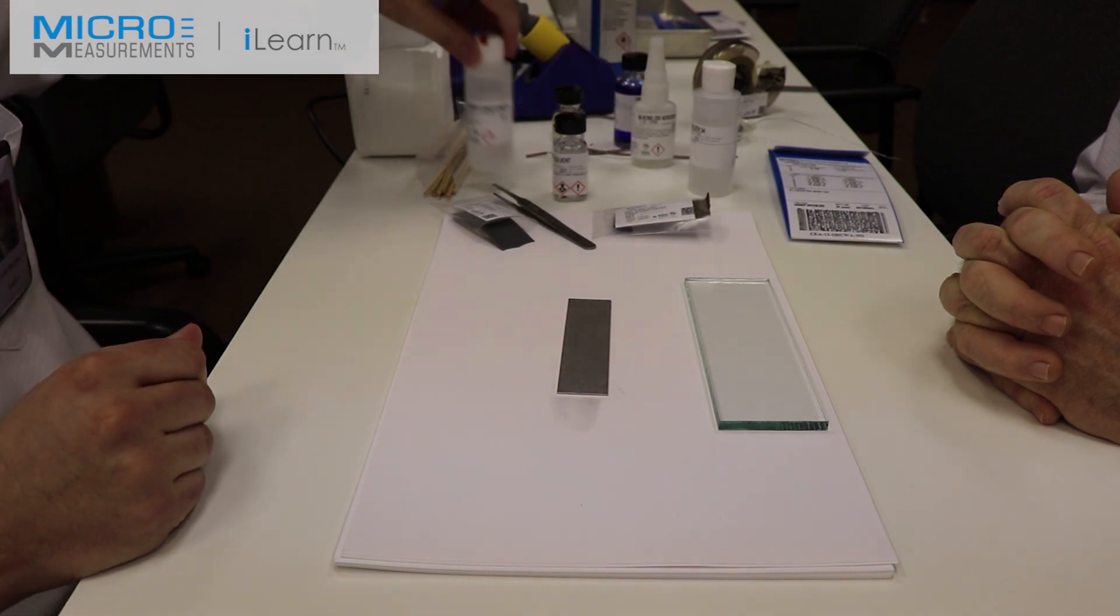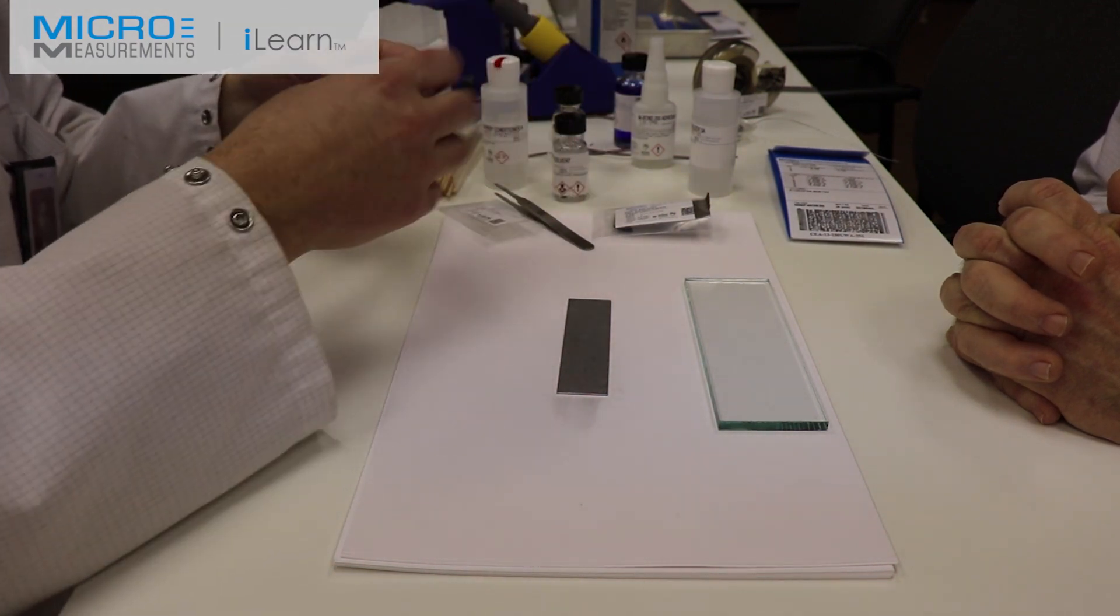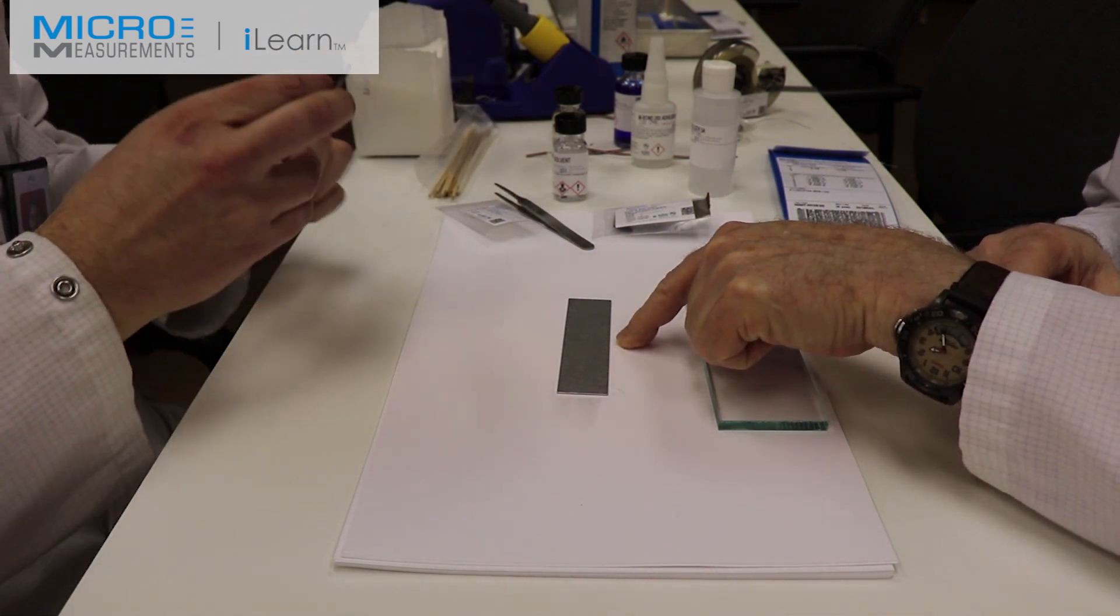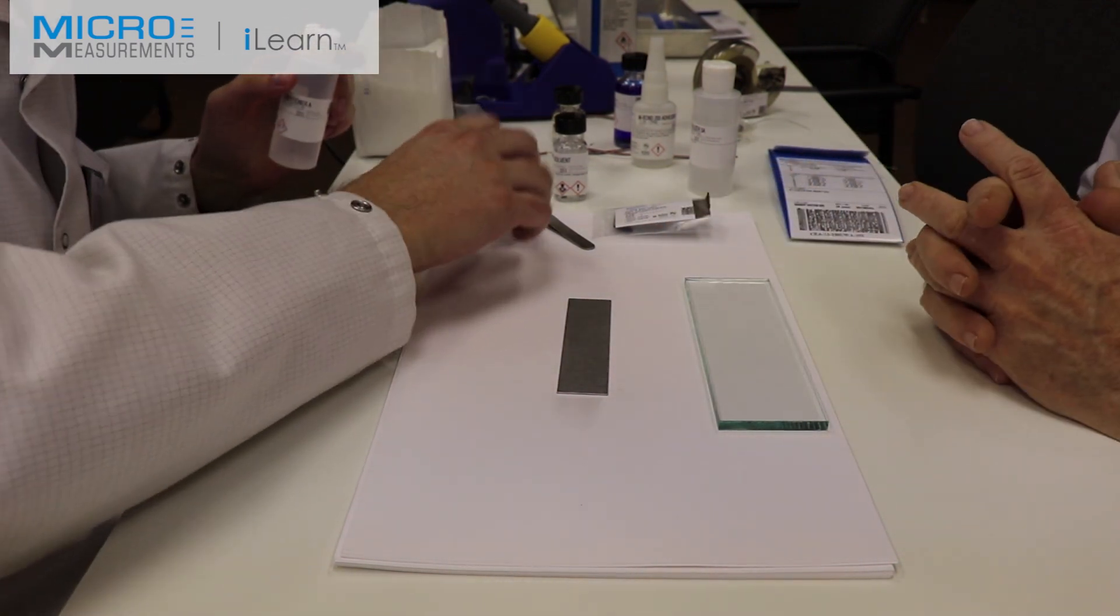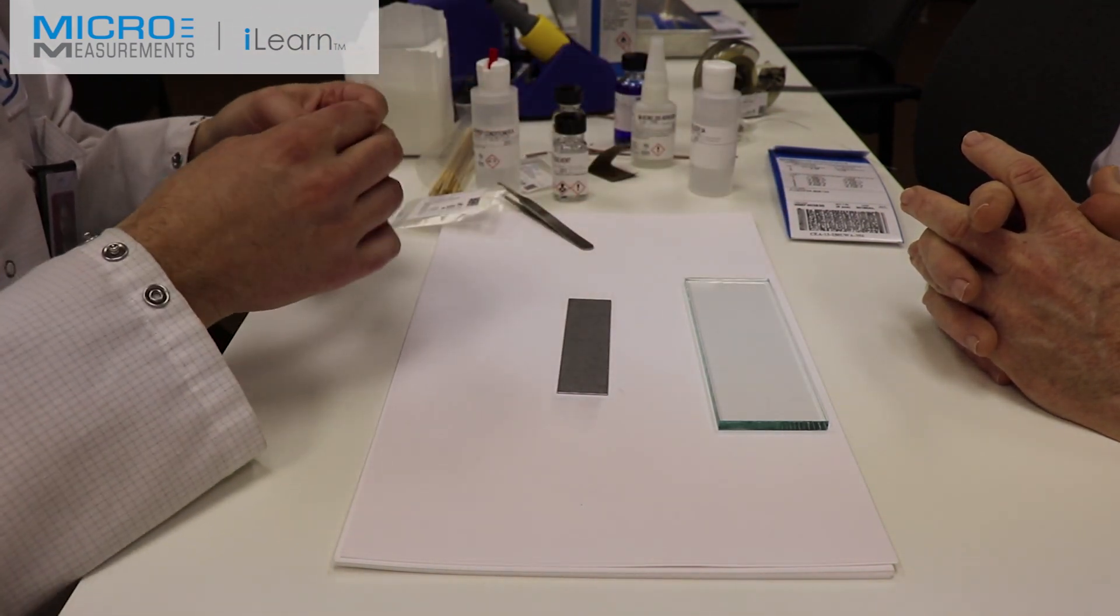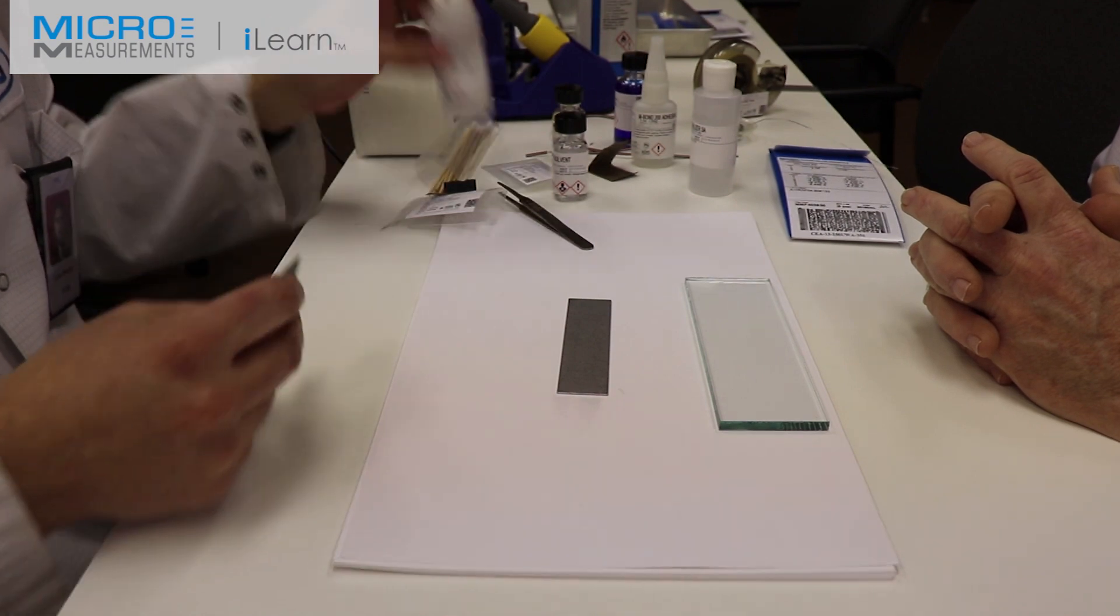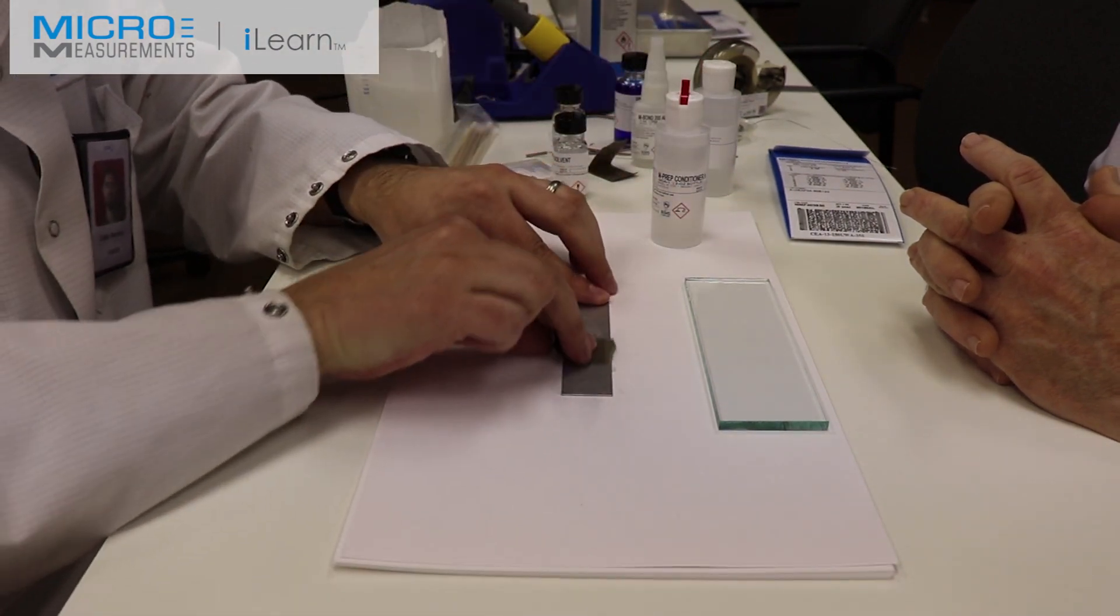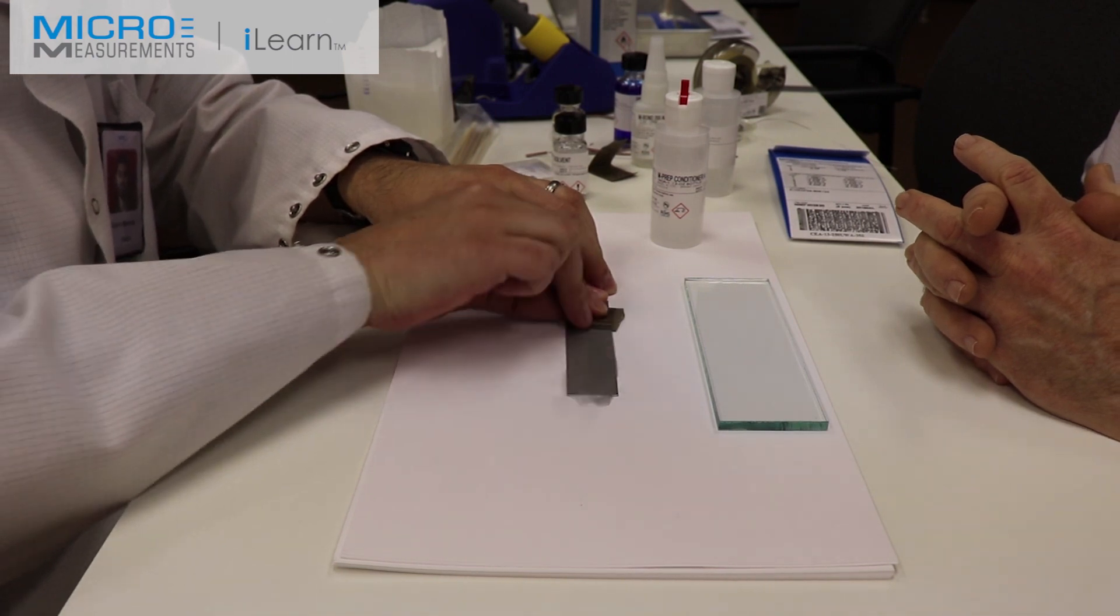Next step is we're going to take the Conditioner A and the 400 grit. Because we've got a relatively smooth surface here, we're going to start straight with the 400 grit rather than the 320. You'll also use your Conditioner A, the mild phosphoric acid solution. We're going to flood the beam, take some of the 400 grit, and lightly abrade 10 or 12 strokes.